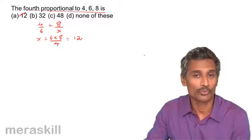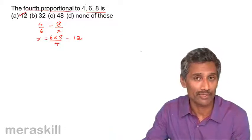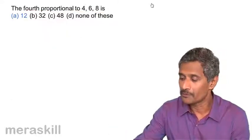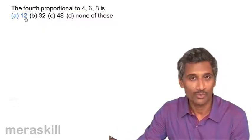4 by 6, 4, 6, 8 and the fourth proportional will be 12 and you see that the ratio is going to be 2 by 3 when 8 by 12 is 2 by 3, 4 by 6 is also 2 by 3. So, from here hence we have the answer as 12.